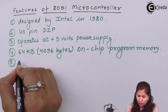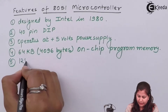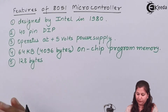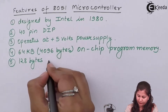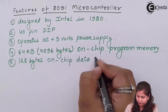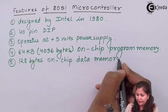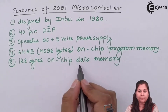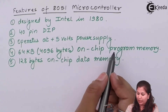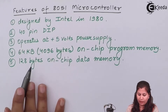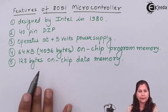It also has 128 bytes of on-chip data memory. So this microcontroller has both program memory and data memory present on the same chip — program memory is 64 kilobytes and data memory is 128 bytes.